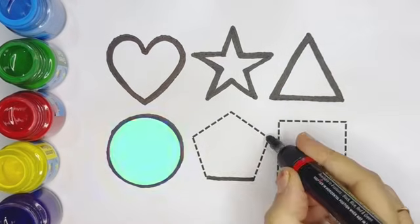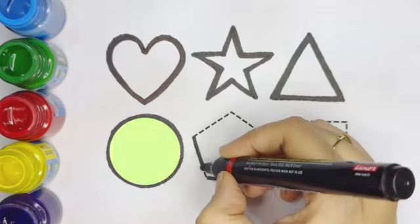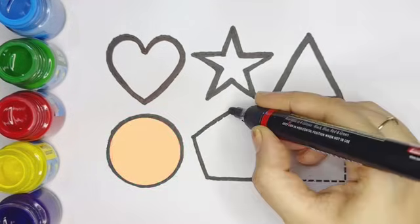Circle, kids. This is circle. Pentagon, kids. This shape is called pentagon.